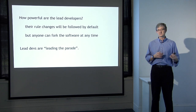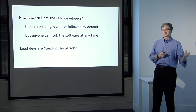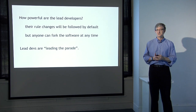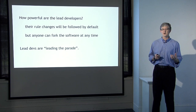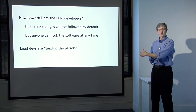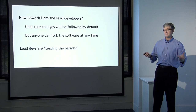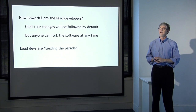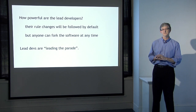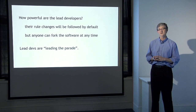On the other hand, because it's open source software and anybody can copy and modify it, anybody can fork the software at any time. If the lead developers start behaving in a way that the community strongly rejects, the community can go a different direction. One way of thinking about this: the lead developers are leading the parade, and the parade will generally follow them when they turn a corner. But if they try to lead the parade in a disastrous direction, the people marching behind them might decide to go a different direction. They don't have formal power to force people to follow them if they take the system in a direction the community doesn't like.